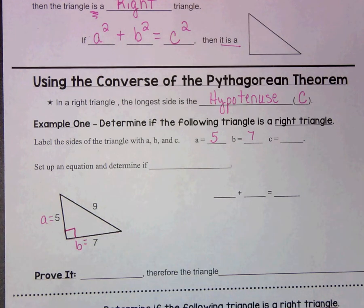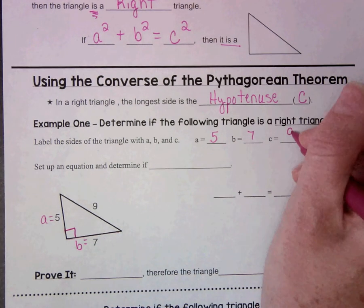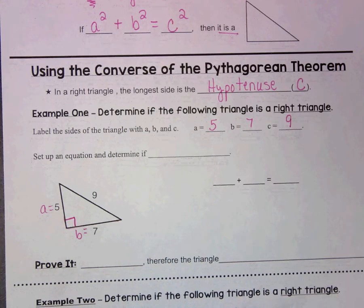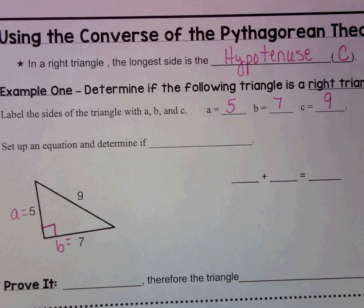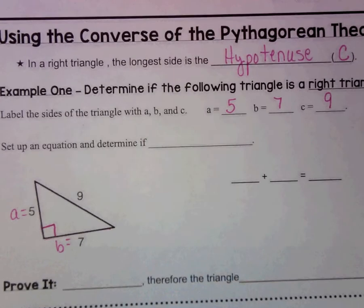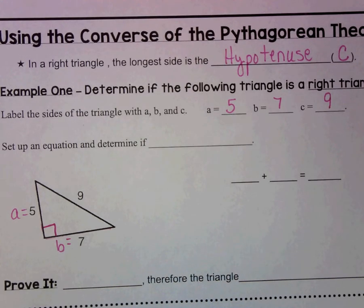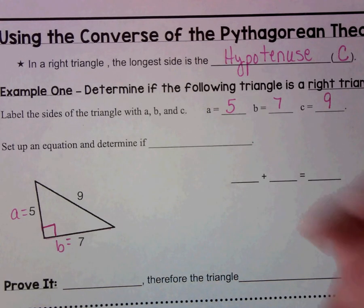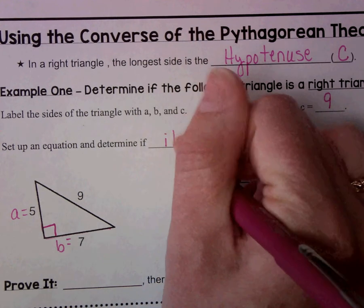Remember, it would be okay if you switch those up. And then side C would be 9. We know that side C is 9 because, again, it is the longest side.